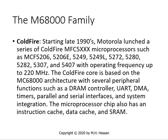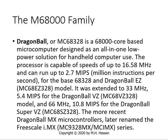The ColdFire processor: starting in the late 1990s, Motorola launched a series of ColdFire MCF5-XXX microprocessors, such as MCF5206, 5206E, 5249, 5290, 5272, 5282, 5307, operating at frequencies up to 220 MHz. The ColdFire core is based on the MC68000 architecture, with several functions such as DRAM controller, DMA timers, parallel and serial interfaces, and system integration. The microprocessor chip also has an instruction cache and data cache.